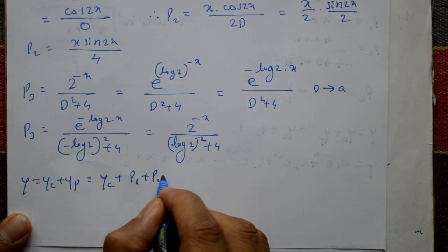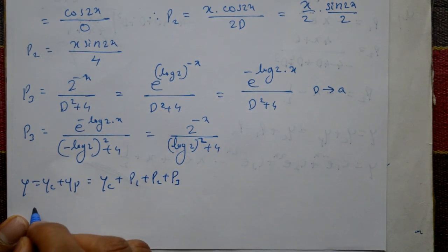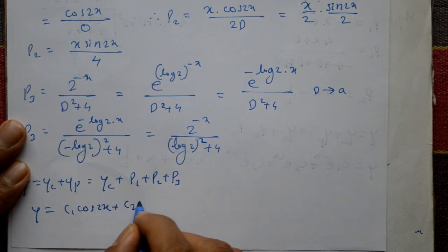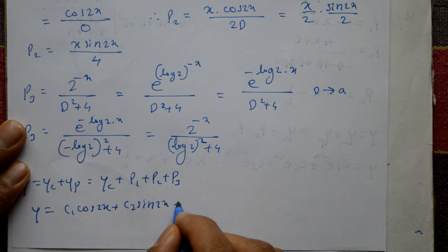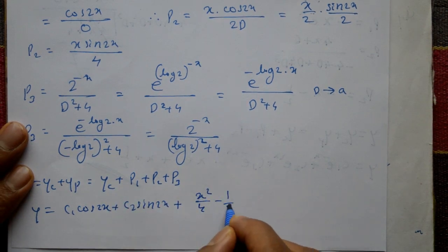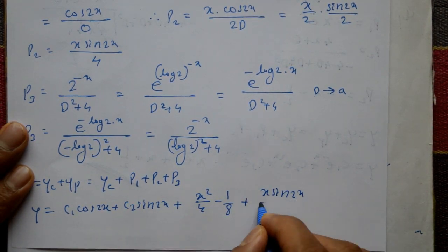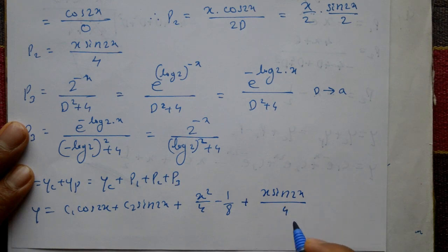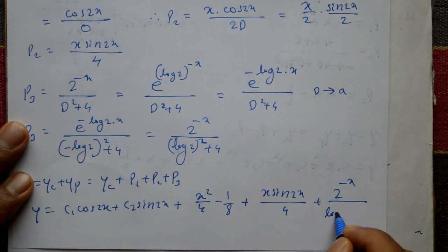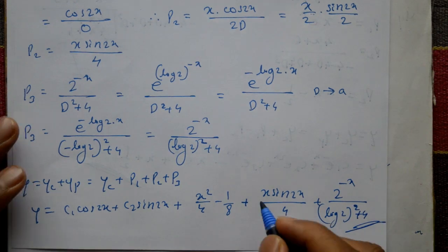The general solution is y = yc + yp = yc + P1 + P2 + P3. Therefore: y = c₁cos(2x) + c₂sin(2x) + x²/4 - 1/8 + x·sin(2x)/4 + 2^(-x)/((log2)² + 4). This is the required general solution.